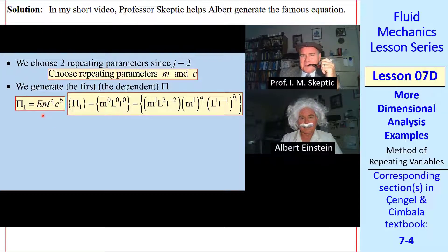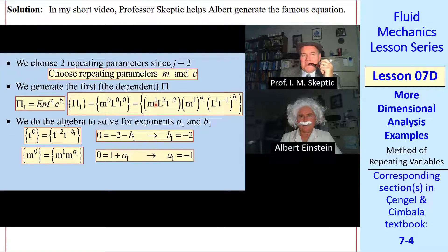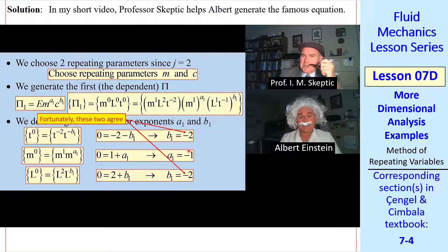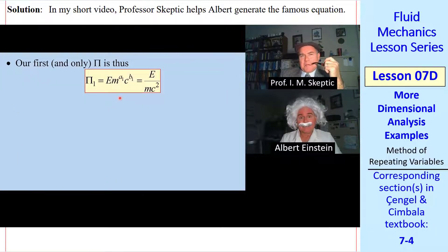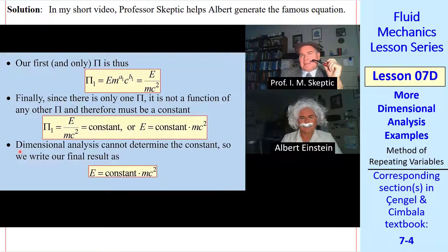We generate the first pi by dimensional reasoning. We set pi 1 to the dependent variable e, times the two independent variables to some unknown exponents. The pi itself has to be non-dimensional, and these are the primary dimensions of e, m to its exponent, and c to its exponent. The algebra is trivial to solve for these exponents. t to the 0 equals t to the negative 2, times t to the negative 1, b1. We see that here. And it's easy to solve for the exponent b1. b1 is negative 2. We do the same for mass. 0 equal 1 plus a1. a1 has to equal negative 1. Finally, for L, we find b1 is negative 2. Fortunately, these two agree, or we'd be in trouble. Our first and only pi is this. Pi 1 is e over mc squared. But since there's only one pi, it can't be a function of anything else. So it must be a constant. Solving for e is some constant times mc squared. Dimensional analysis cannot determine the constant. So our final result is e equal constant times mc squared.